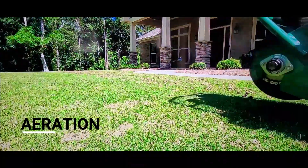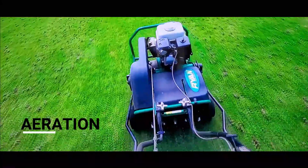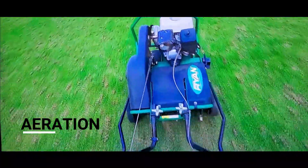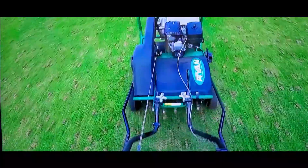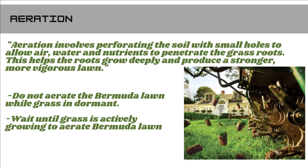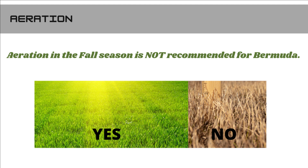Aeration: core aeration is the process of punching small holes in the turf and into the soil to alleviate compaction, thus allowing air to get into the root system. For Bermuda grass, do not aerate the lawn when the grass is in dormant status. Wait until a green layer of grass has popped up — meaning when the lawn is actively growing and green. Do not aerate and overseed Bermuda grass lawns in the fall; it will not help.